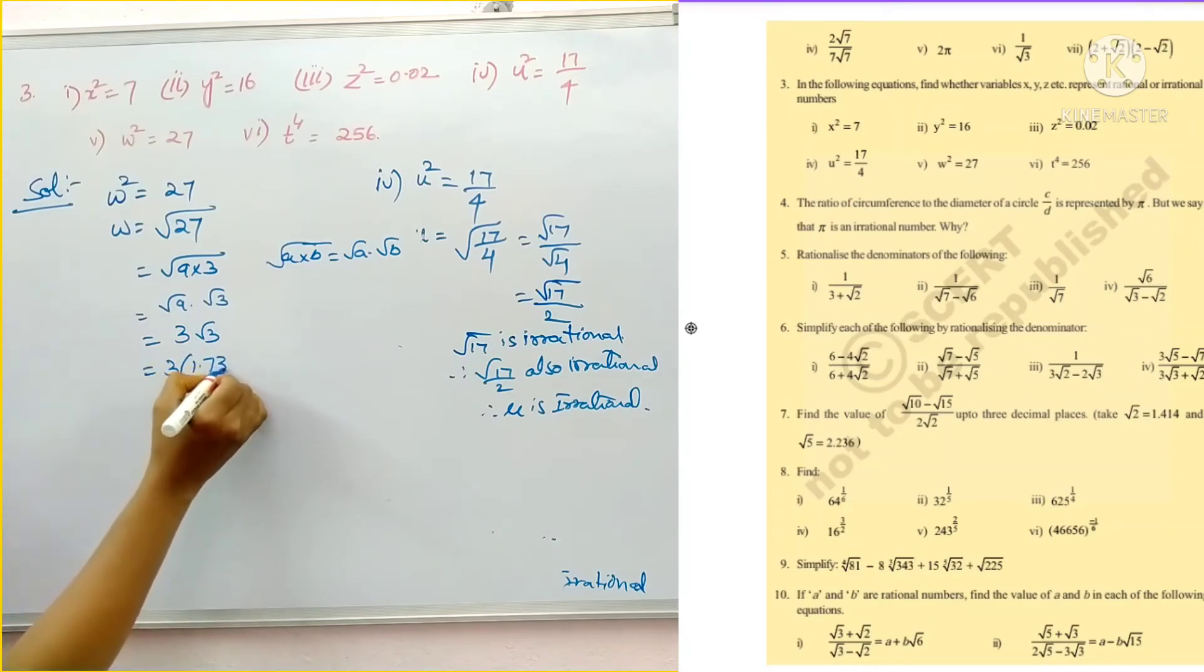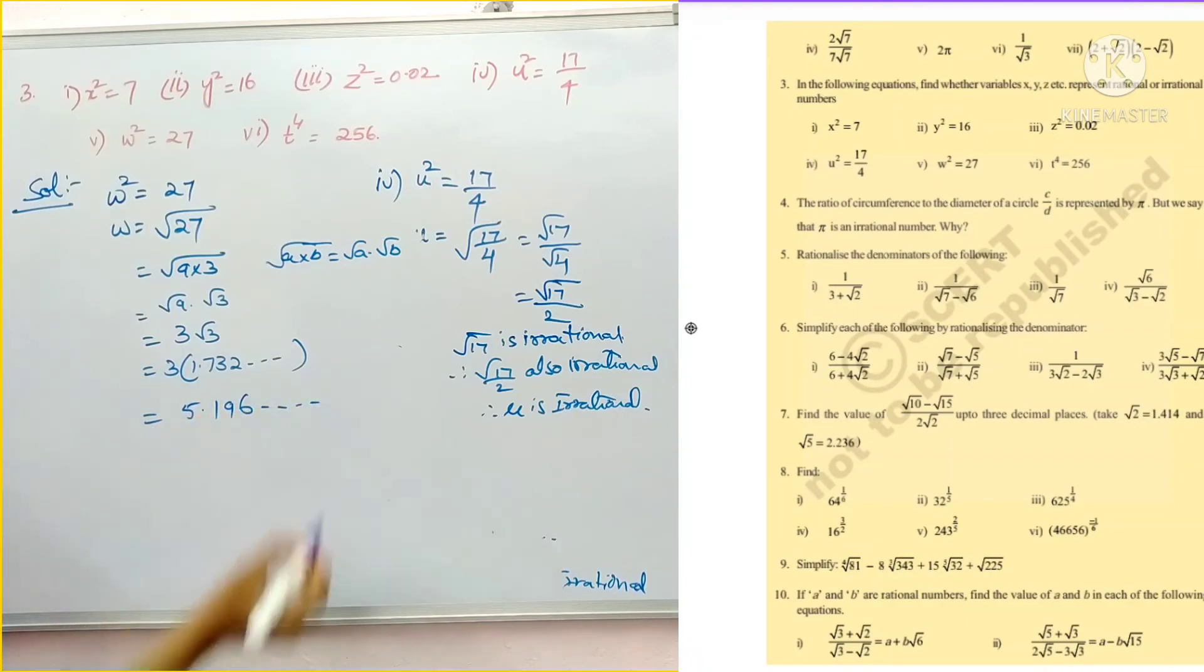1.732 and so on. So after multiplying, 3 times 2 is 6, 3 times 3 is 9, 3 times 7 is 21, 3 times 1 is 3 plus that 2, 5.196 and so on. So clearly it is non-terminating. So this is irrational number. Therefore w is irrational number.